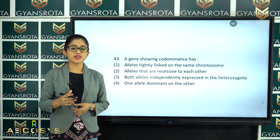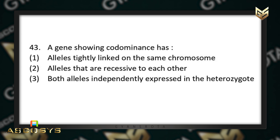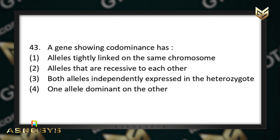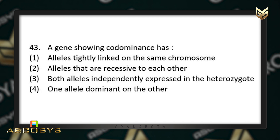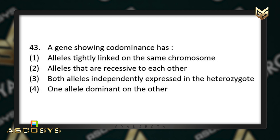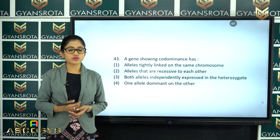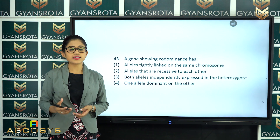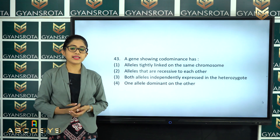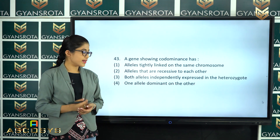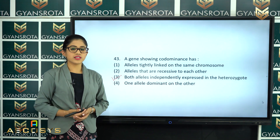The next question is question number 43. A gene showing co-dominance has: alleles tightly linked on the same chromosome; alleles that are recessive to each other; both alleles independently expressed in the heterozygote; or one allele dominant over the other? From the chapter Principles of Inheritance and Variation, co-dominance means both alleles are independently expressed in the heterozygote. Option number 3 is the correct answer.